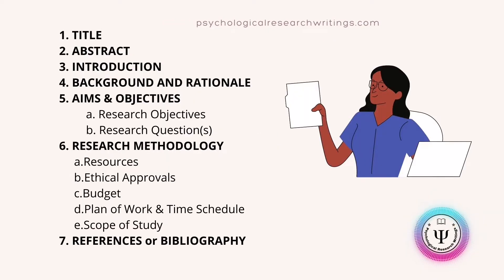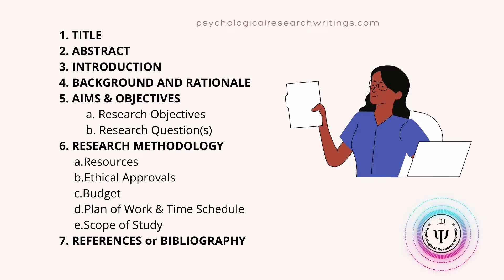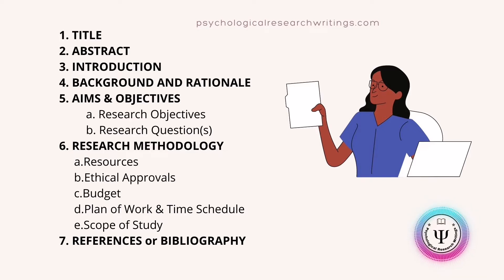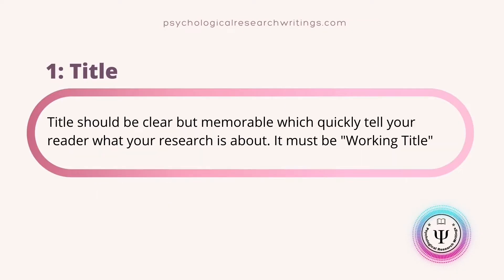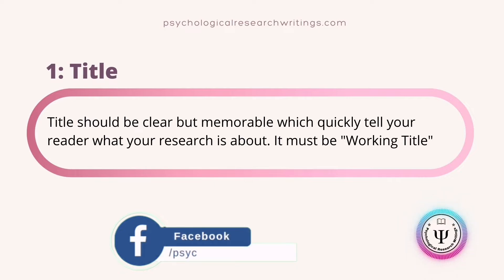A good version of a research proposal must include the following sections: the title, abstract, introduction, background and rationale, aims and objectives — with subheadings including research objectives and research questions. The sixth section is research methodology, with subsections covering resources, ethical approvals, budget, plan of work and time schedule, and scope of study. The seventh section is references or bibliography. Let's start to know each of them in detail.